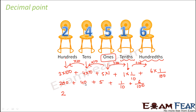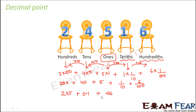Now 200 plus 40 plus 5 becomes 245. Plus 1/10 would be 0.1. Similarly, 6/100 would be 0.06. So we have written the values of these fractions — please do not confuse yourself about how to write the values of fractions, because we will learn that a little later. So 245 plus 0.1 plus 0.06 gives us 245.16.